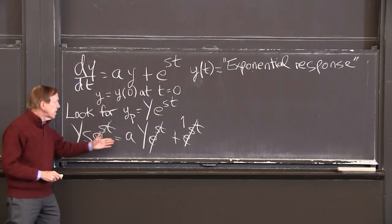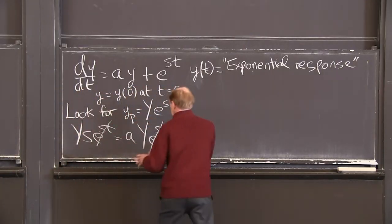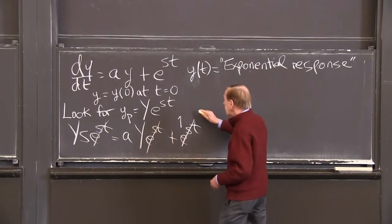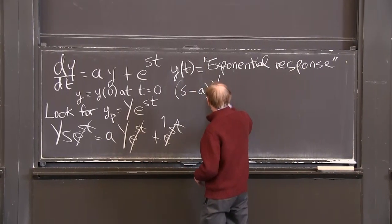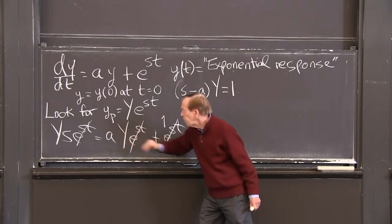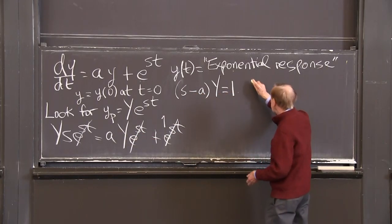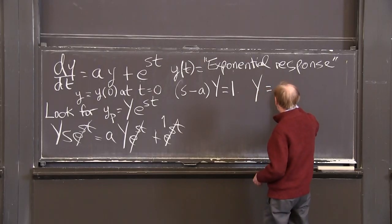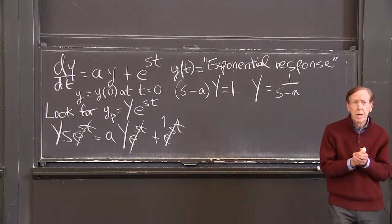It just leaves me with a 1. So I have Y times s, Y times a, plus 1. So let me write that equation so you see it. That's just (s-a) times Y is 1. I took a times Y and put it on the left side of the equation. So I've discovered the exponential response, 1 over (s-a). So I have a solution to the equation.